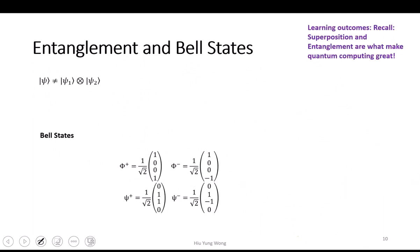When we talk about entanglement, as I said earlier, it is about not being able to express a state as a tensor product of two subspace vectors. Here I want to introduce four states called the Bell states — they are very important. We already created one of them: phi-plus, which is (1/√2)(|00⟩ + |11⟩). For a two-qubit state, we can form a basis.